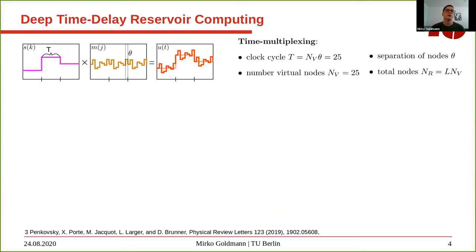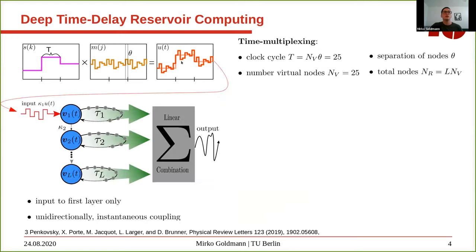The deep time delay reservoir computing uses time multiplexing and input pre-processing. We hold and sample our inputs s of k for a clock cycle theta, which will be 25 during the presentation. We multiply each clock cycle by a mask — a clock-cycle periodic function with 25 steps — and accordingly we generate 25 virtual nodes. Using this time multiplexing, we gain a time-continuous input sequence u of t, which we then feed to our reservoir.